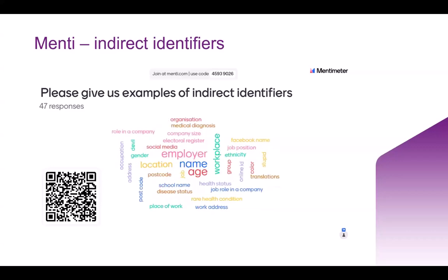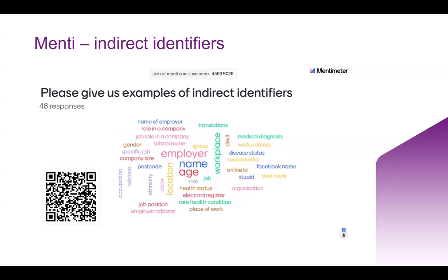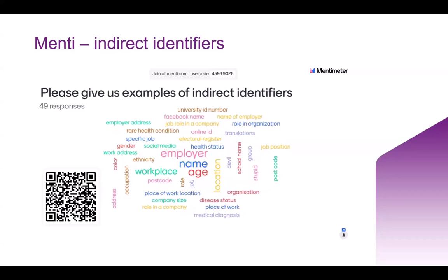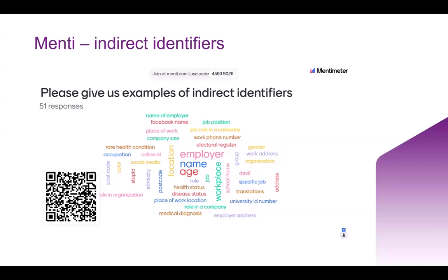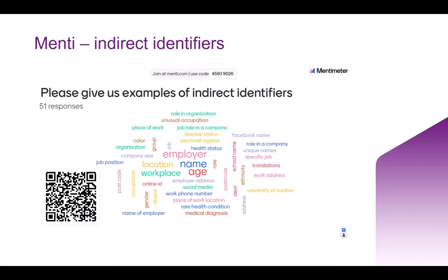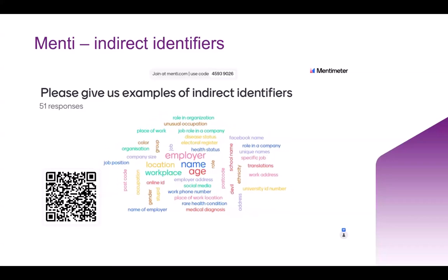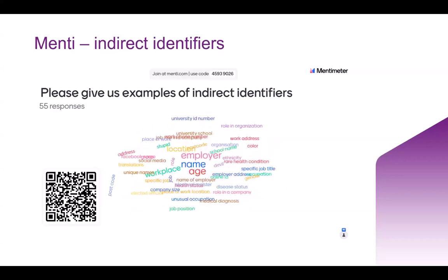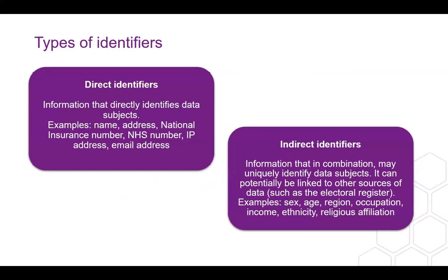Health status, medical diagnosis — again it might depend on the diagnosis. If it's a particularly rare diagnosis, that might be a more direct identifier. But all of these could be working as indirect identifiers — excellent responses. Hopefully we've established that distinction between direct and indirect.